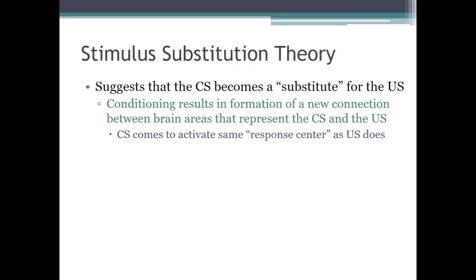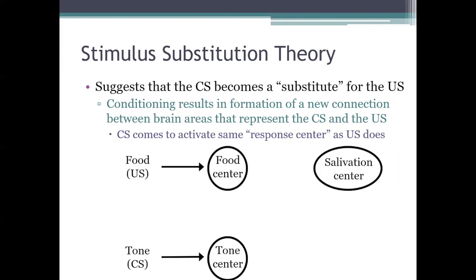The first theory of classical conditioning was developed by Pavlov himself, and it's pretty clear that Pavlov's background as a physiologist played an important role in how he understood it. Pavlov tried to explain classical conditioning in neurological terms — he wanted to know what was going on in the brain. He basically thought that different stimuli and different responses are detected and controlled by distinct areas of the brain. For example, when a dog is presented with food, that activates the food center of its brain; when it hears a tone, that activates a tone center; and when the salivation center gets activated, the dog salivates.